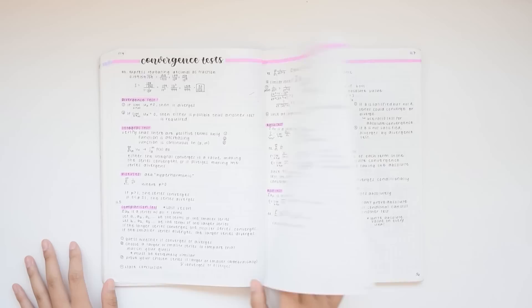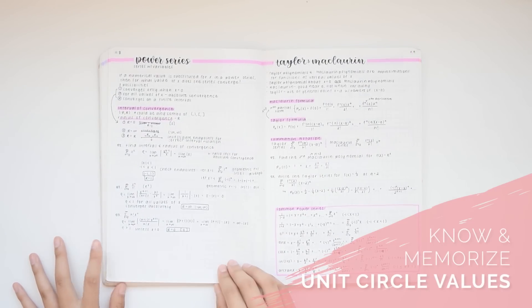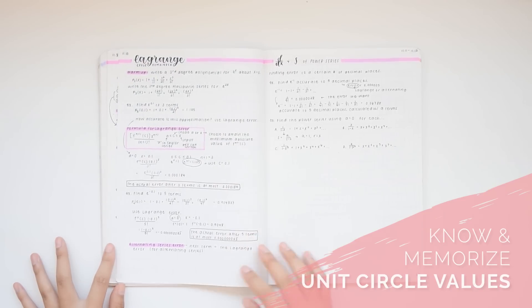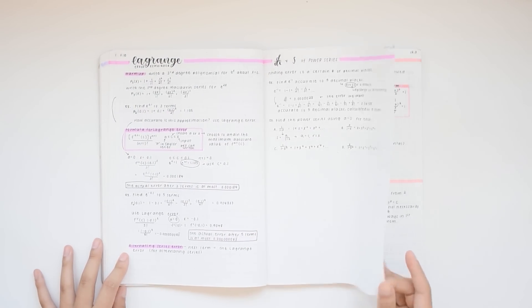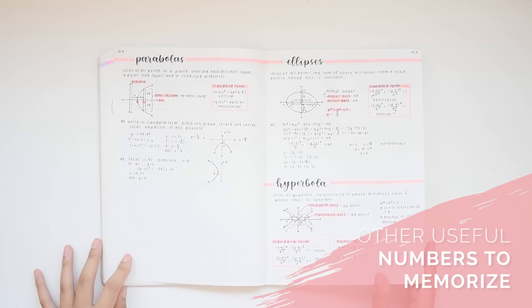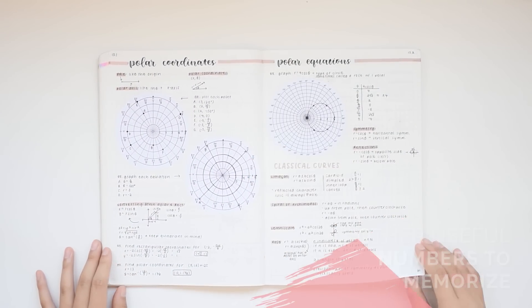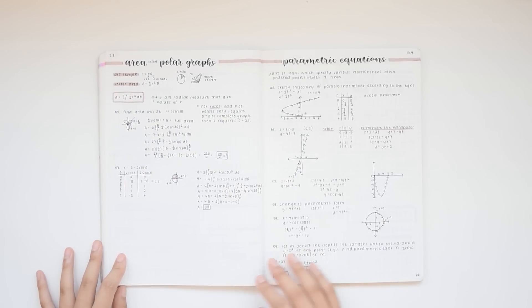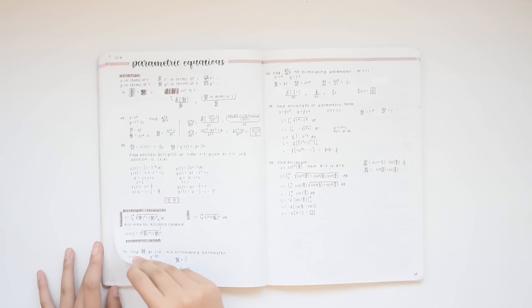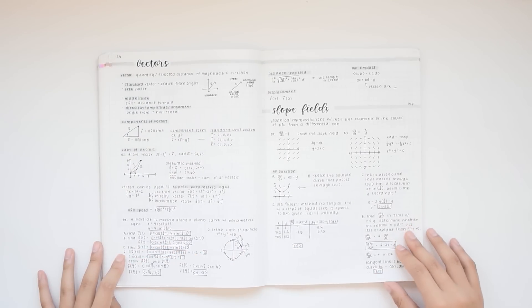Another thing that I also really recommend you memorize and know like the back of your hand are the unit circle values. It really helps since there's quite a bit of trigonometry involved in both trig sections and polar. Some other things you should memorize and just know off the top of your head are the decimal values of common irrational numbers like pi, Euler's number, square root of 2, square root of 3, and your multiplication tables up to like 12 or 13, and then powers of 2 up to somewhere around 2 to the 10th, and powers of 3 up to maybe like 3 to the 7th.